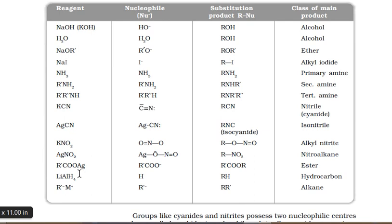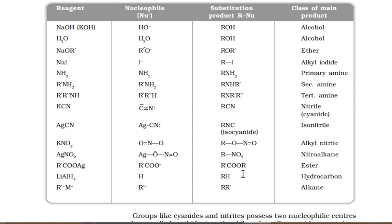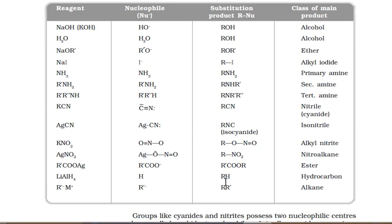With the silver salt of a carboxylic acid (silver carboxylate), the nucleophile is the carboxylate ion, which attacks the alkyl halide to give an ester — named as alkyl alkanoate. With lithium aluminium hydride (LiAlH4) as a reducing agent, the nucleophile is H⁻ (hydride ion), and the product is RH — a hydrocarbon.